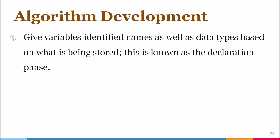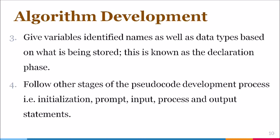The third step that we need to follow is that we give the variables that we identified names as well as appropriate data types. And this is going to be based on what is expected to be stored in the variable. And from our discussions, we know that this part is referred to as the declaration phase. And the fourth step that is recommended is that we follow the other stages of pseudocode development. These include the initialization phase, your prompt input process, as well as your output stages.